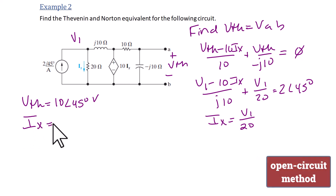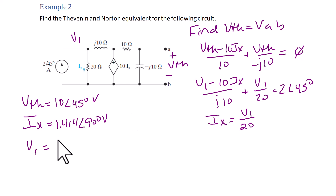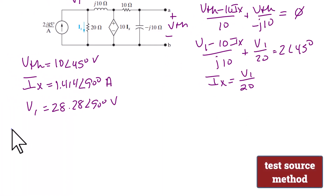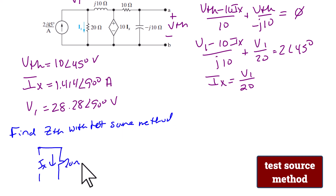From the solution, I_x = 1.414 angle 90 degrees amps, and V1 = 28.28 angle 90 degrees volts. Next we're going to find Z Thevenin using the test source method. The first step is to turn off the current source and make it an open circuit, then copy down the rest of the circuit and add a test current source.